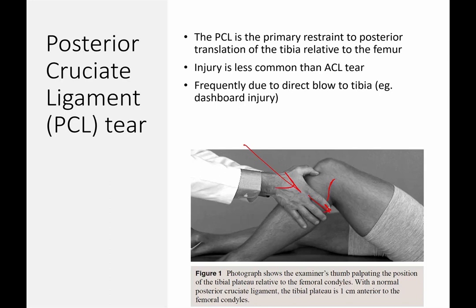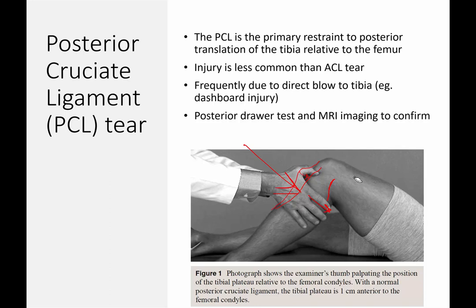With the posterior drawer test, you can also get something called a SAG sign. You put the patient in position for a posterior drawer test and look to see if the tibia is sitting anteriorly or sagging back posteriorly. You compare it to the contralateral knee, and MRI imaging is very good to help confirm this.